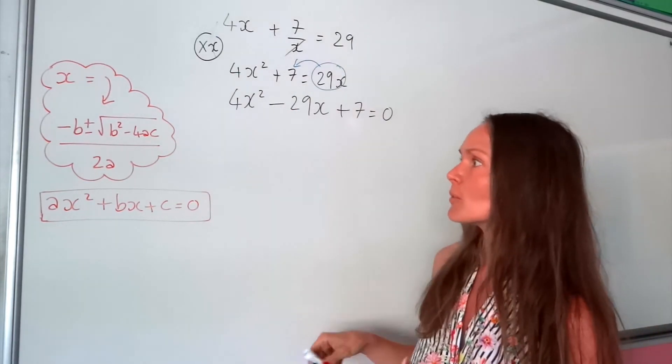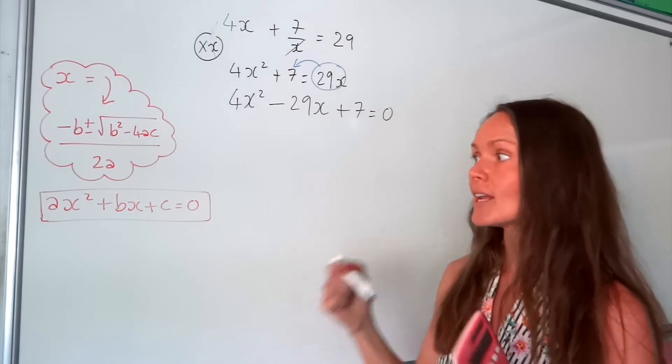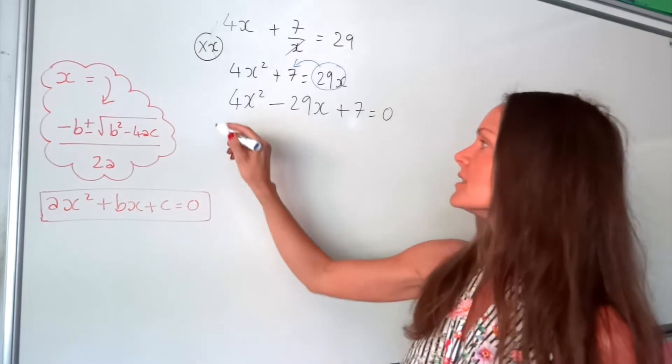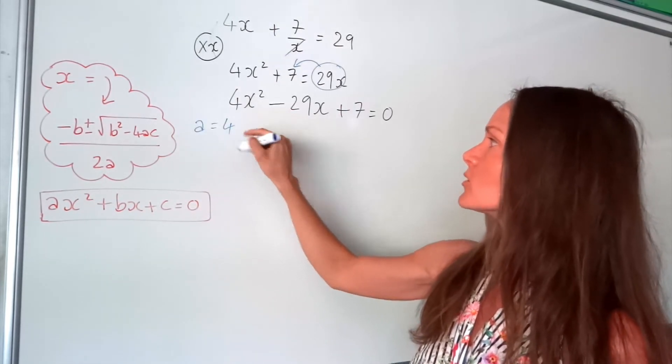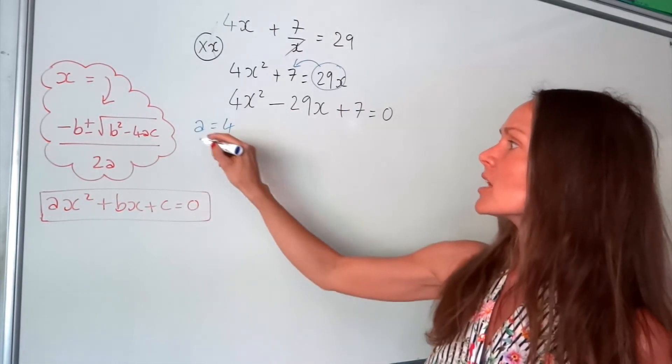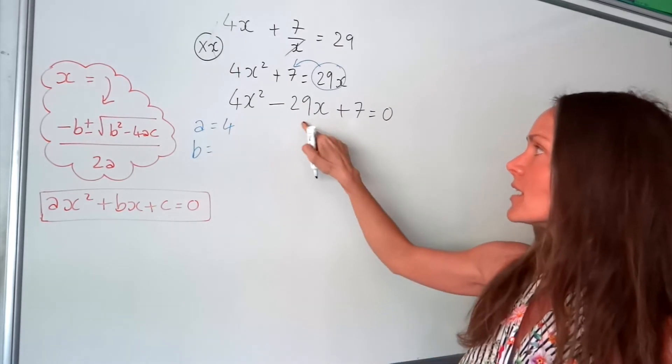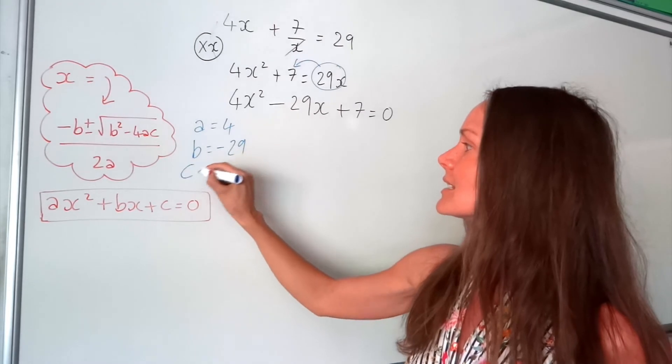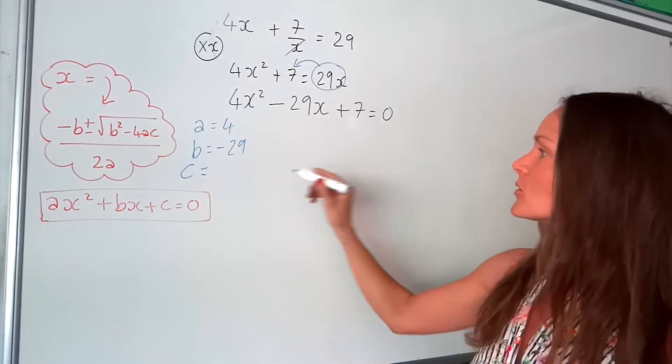So next, just like before, we can identify our values of a, b, and c. a is just the coefficient of x squared, so here it would be positive 4. b is the number in front of the x, so here, negative 29, don't forget that sign. And c is the number by itself, so positive 7.